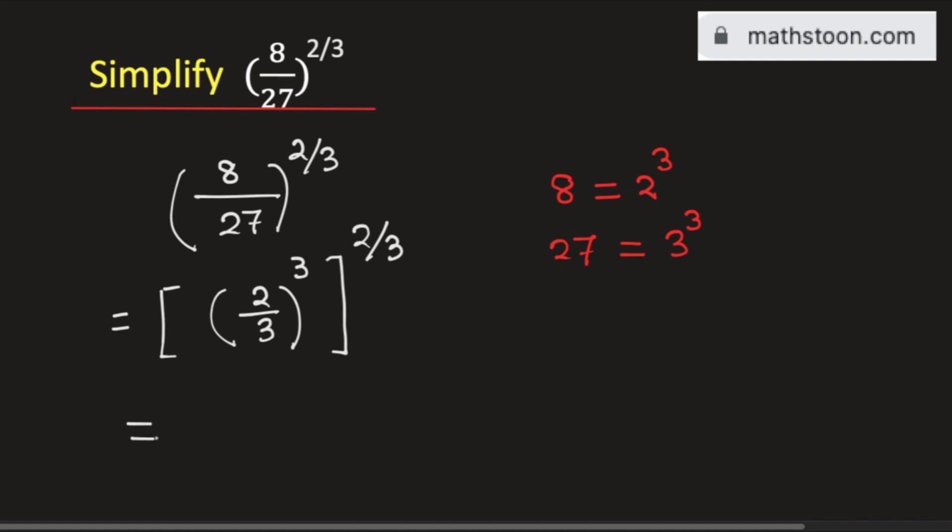Now using the rule of indices, we need to multiply the exponents. Then we will get (2/3)^(3 × 2/3). Now see that the 3s get cancelled and we are left with 2 in the exponent.